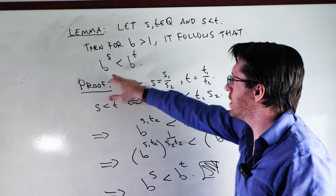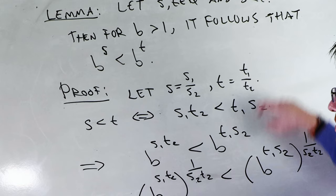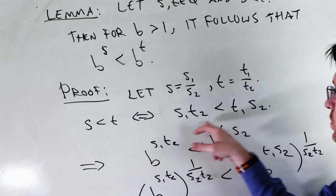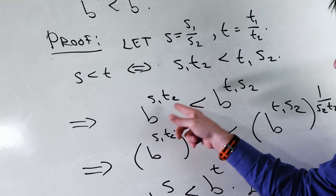For rational S less than rational T, B to the S is less than B to the T when B is greater than 1. Let S be S1 divided by S2 and T be T1 divided by T2. We know that S is less than T if and only if S1 times T2 is less than S2 times T1.